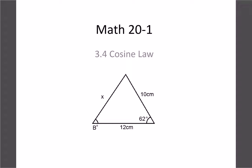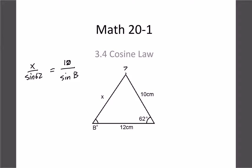Our last topic for our regular trig unit — we're looking at triangles again, specifically the cosine law. We went through the sine law and the ambiguous case, but there's one other scenario that causes a problem. In this example, find side x. If we try to use the sine law, we'd have x over sine 62, but we don't know the opposite angles for either of the other sides, so the sine law just doesn't work.